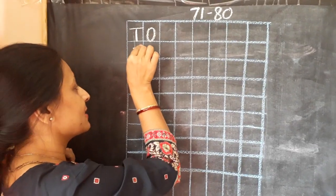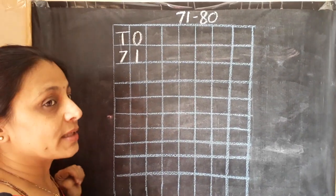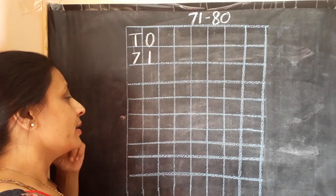Now, first of all, I will write 71. Whenever we say the number, you are going to repeat after me.